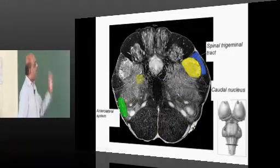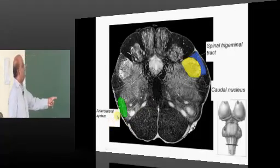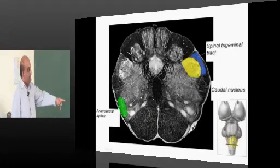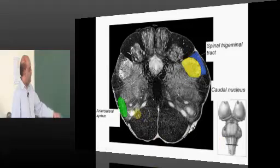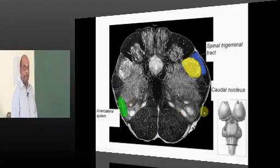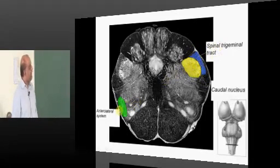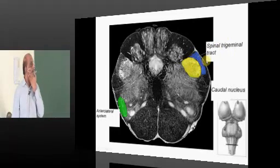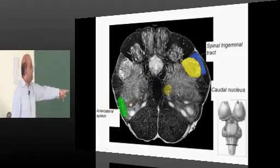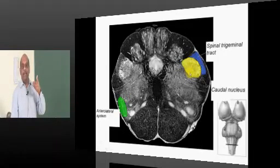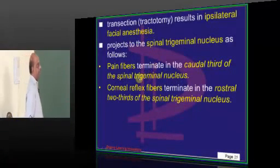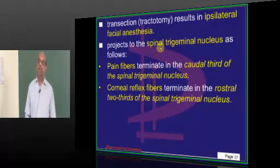On a cut section at the level of the medulla, you have the anterolateral system located in the lateral part, and you also have the spinal trigeminal tract also located laterally. Both can get affected in lateral medullary syndrome. But the spinal trigeminal tract brings pain and temperature from the ipsilateral half of the face, while the anterolateral spinothalamic tract brings pain and temperature from the contralateral side — resulting in loss of pain and temperature contralaterally. That is the complete story about the trigeminal nucleus.